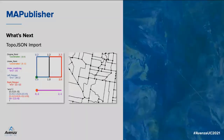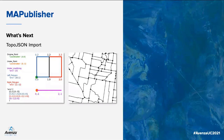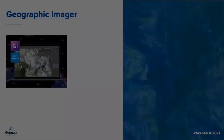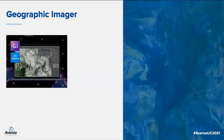We'll also be adding support for importing TopoJSON, an extension of GeoJSON that encodes topology. Rather than representing geometries discretely, geometries in TopoJSON files are stitched together from shared line segments, so we're looking forward to getting that one out soon.